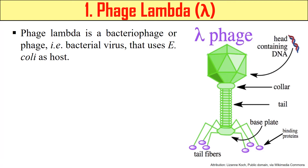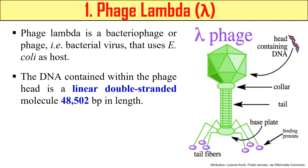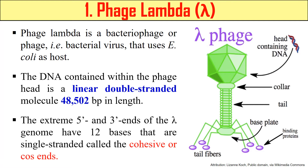The first example is Bacteriophage Lambda. As you can clearly see in the diagram, it has a head formed of protein enclosing its genome, and it also has a tail. The genome of Lambda phage consists of a double-stranded DNA molecule of length 48.5 KB or 48,502 base pairs. Besides this, there are 12 base pairs that are single-stranded on both the 5' and 3' ends. These unpaired bases are known as cohesive or cos ends, and they help in the circularization of this DNA molecule.